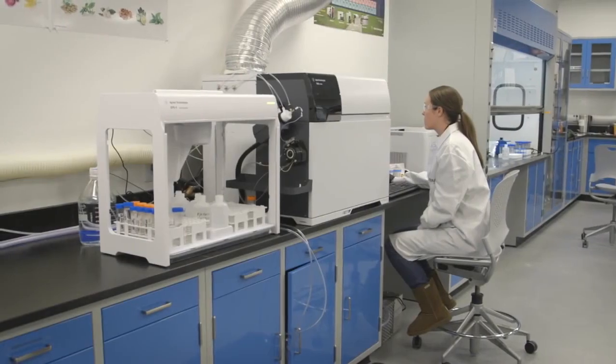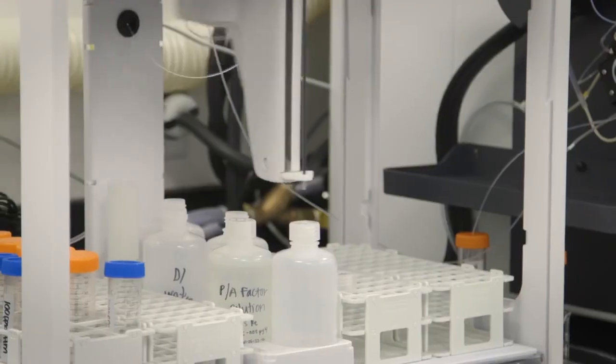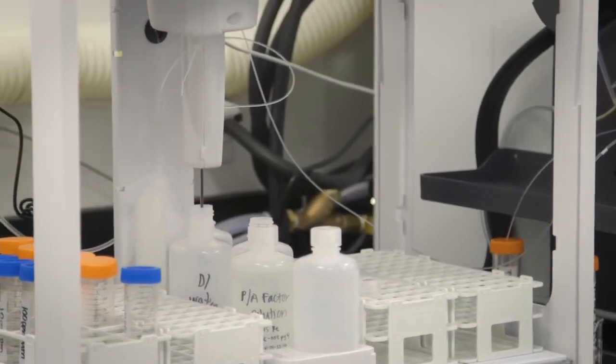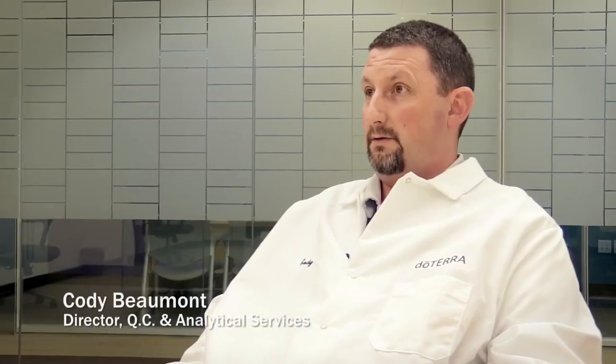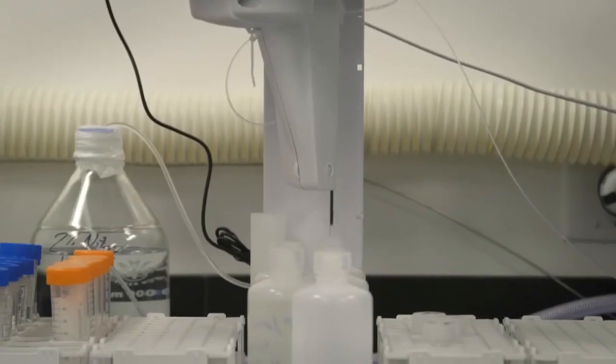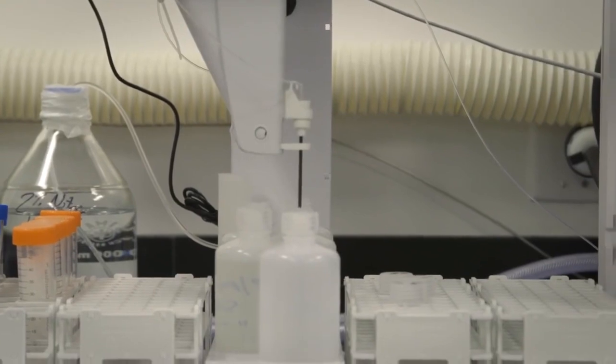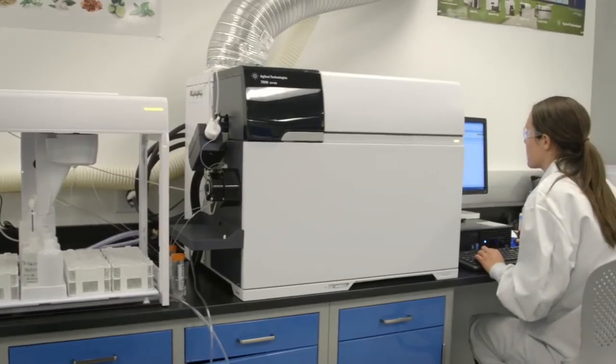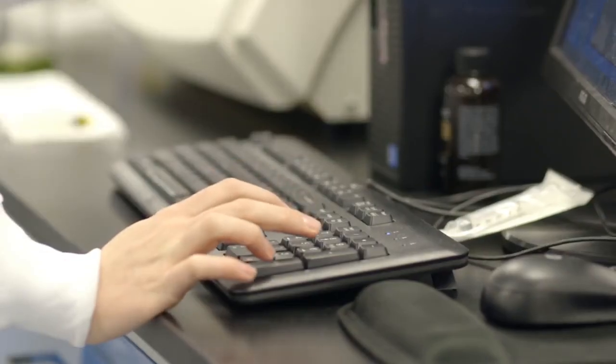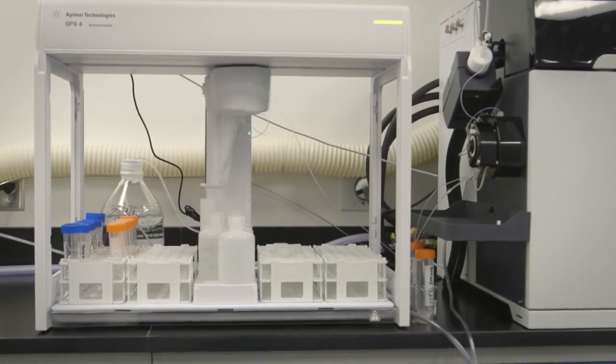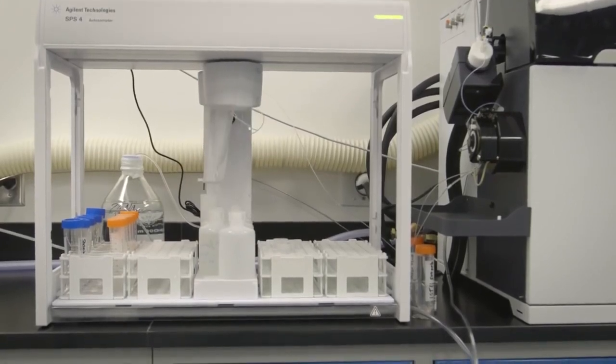In the lab, we have an ICP-MS. ICP stands for inductively coupled plasma, and MS stands for mass spectroscopy. It's a different form of mass spectroscopy in which we actually atomize our sample down to its elemental form and measure its mass. The instrument is also used for measuring minerals or any other elements in some of our other product lines, such as our dietary supplements or nutritional supplements.